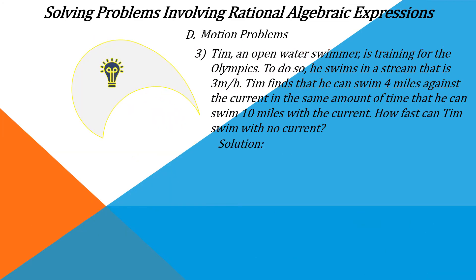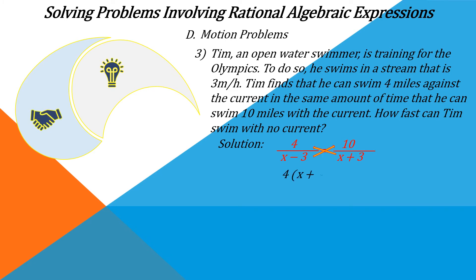Let's go to the next slide and write the equation: 4 over (X minus 3) is equal to 10 over (X plus 3). Since this is an equation of two rational algebraic expressions, we cross multiply. The numerator on the left multiplied by the denominator on the right, and the denominator on the left multiplied by the numerator on the right. So we have: 4 multiplied by (X plus 3) is equal to 10 multiplied by (X minus 3).